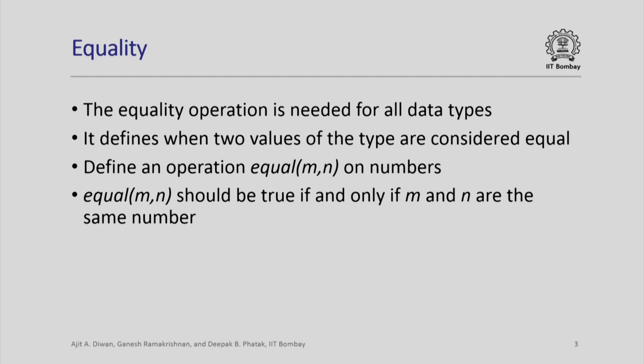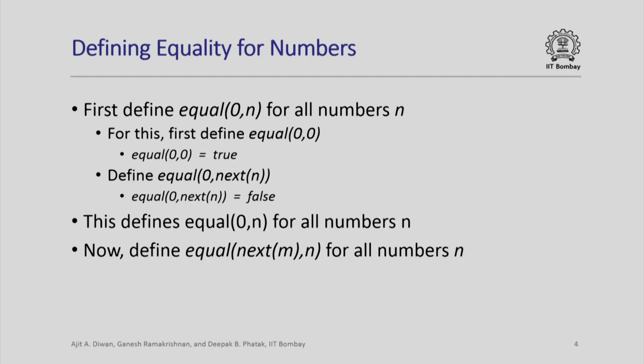Let us look at what we mean by when two numbers are equal. Similarly, we first define equal 0, n for all numbers n. We define equal 0, 0 for n equal to 0, and then assuming equal 0, n is defined, we define it for equal 0, next n. Equal of 0, 0 is defined to be true — 0 is equal to 0 itself. And we define equal of 0, next n to be false — no matter what the value of n is, equal of 0, next of n is always false. The next of any number cannot be equal to 0. This defines equal 0, n for all numbers n.